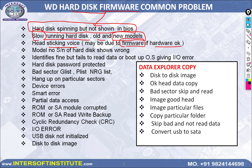Sometimes a hard disk detects in BIOS but shows the wrong model number, wrong size, or something wrong — we can repair this with firmware tools. Hard disk detected but giving I/O error, OS error, or other errors may be firmware issues and can be repaired. If a hard disk has a password, it will not allow data access, so we remove the password with firmware tools.